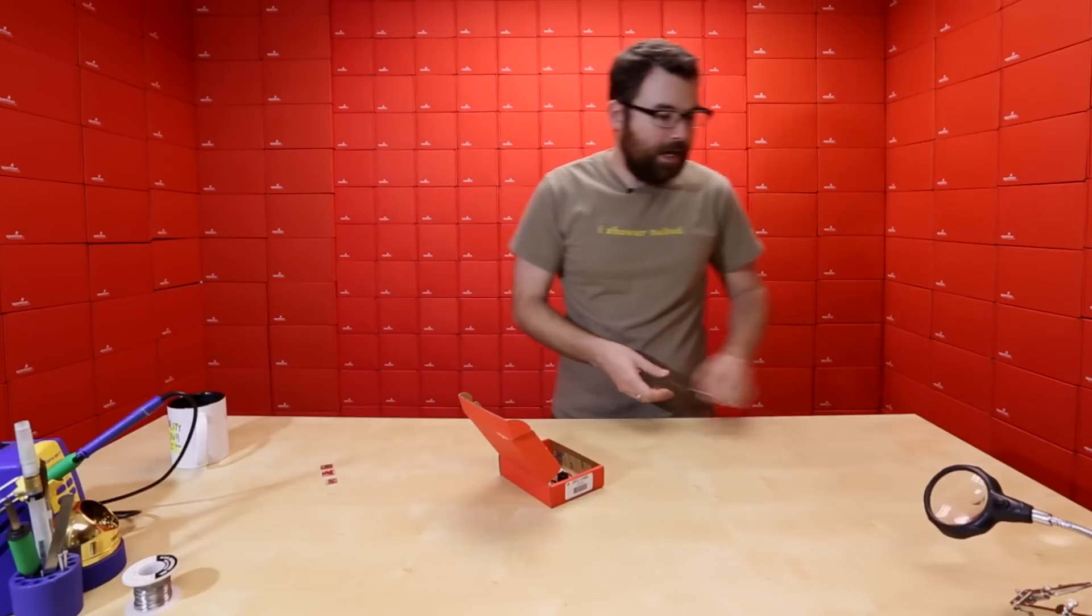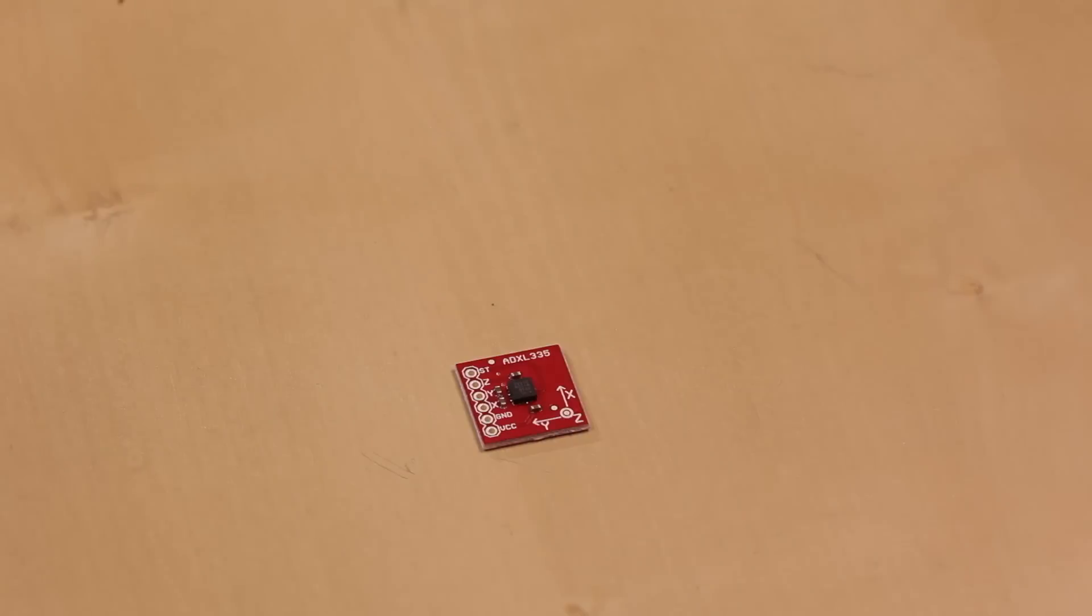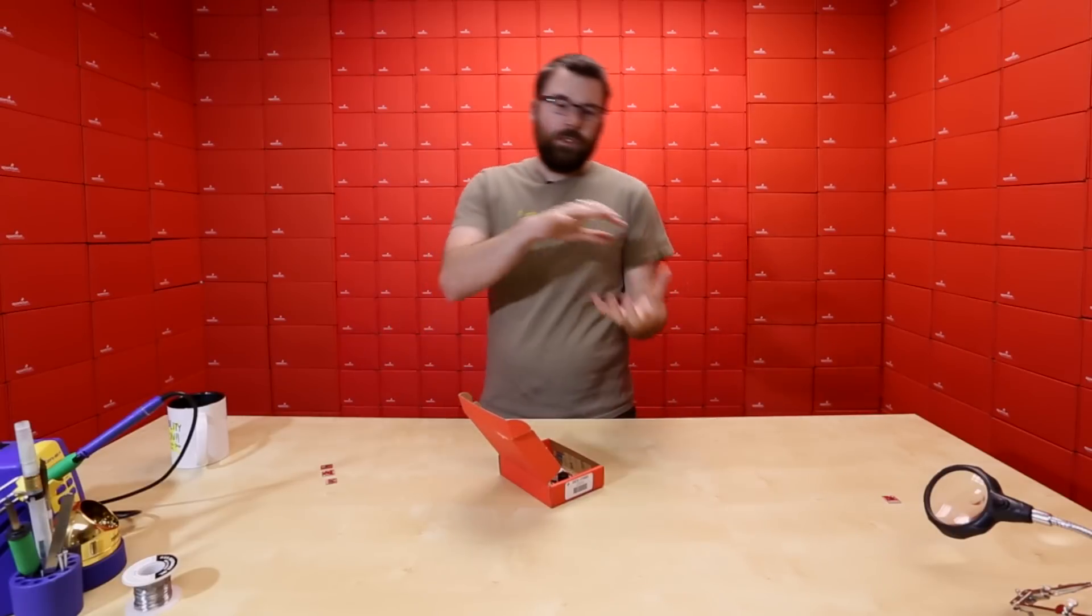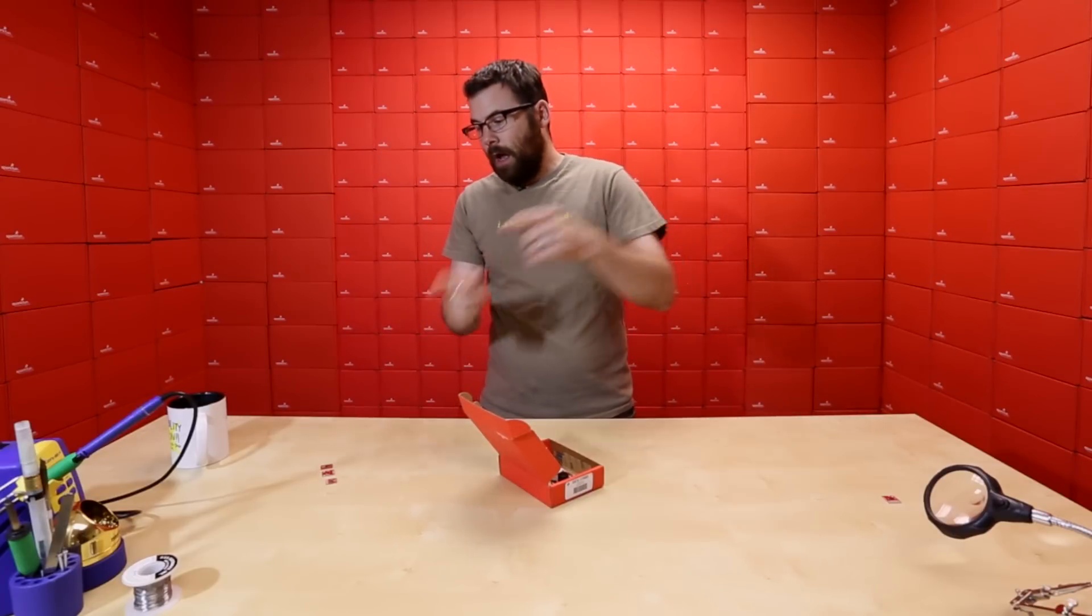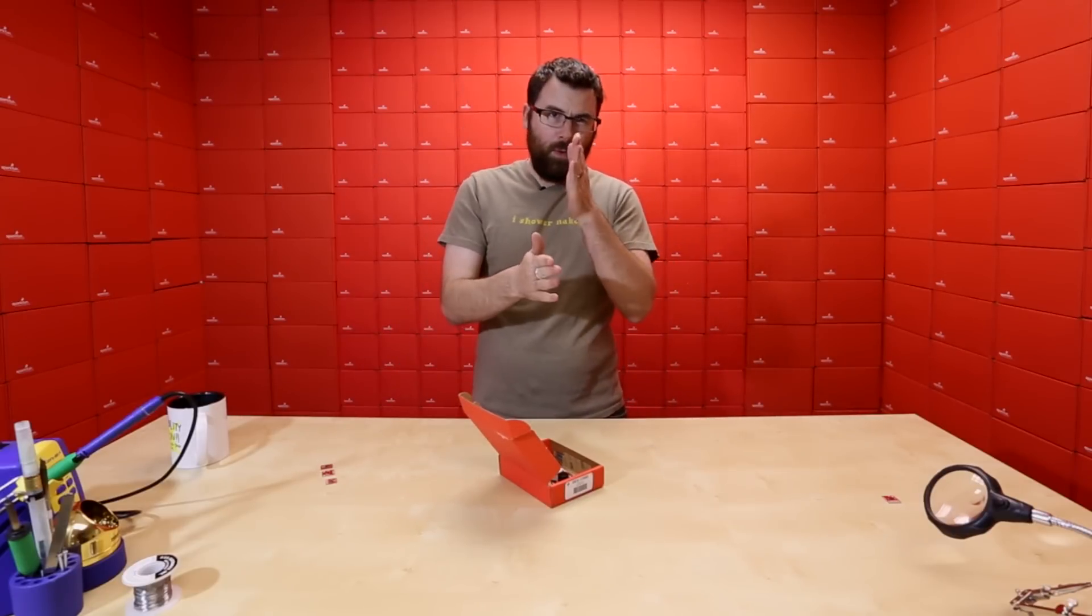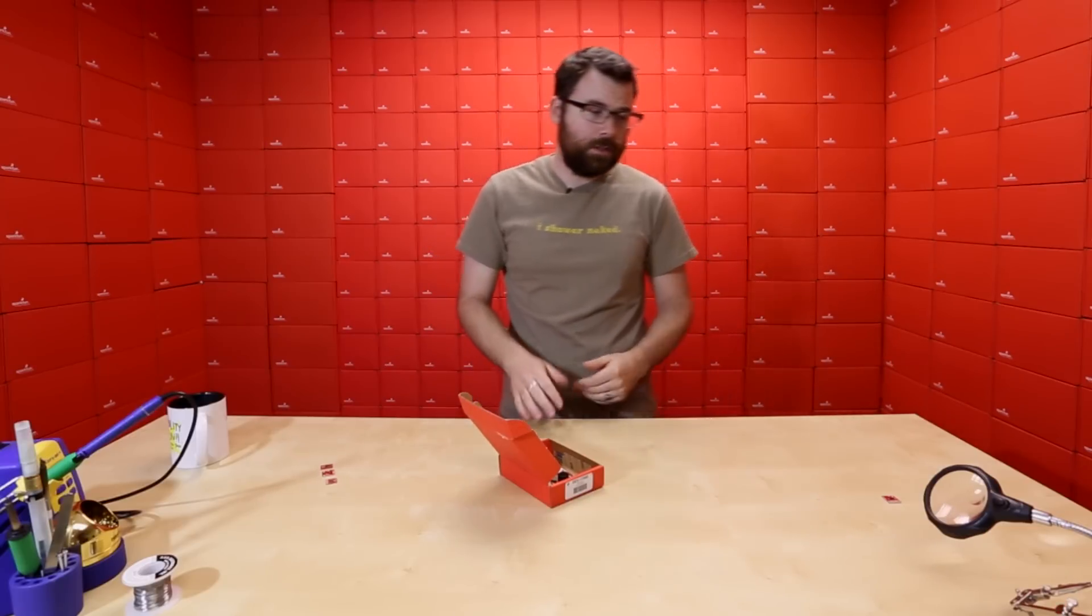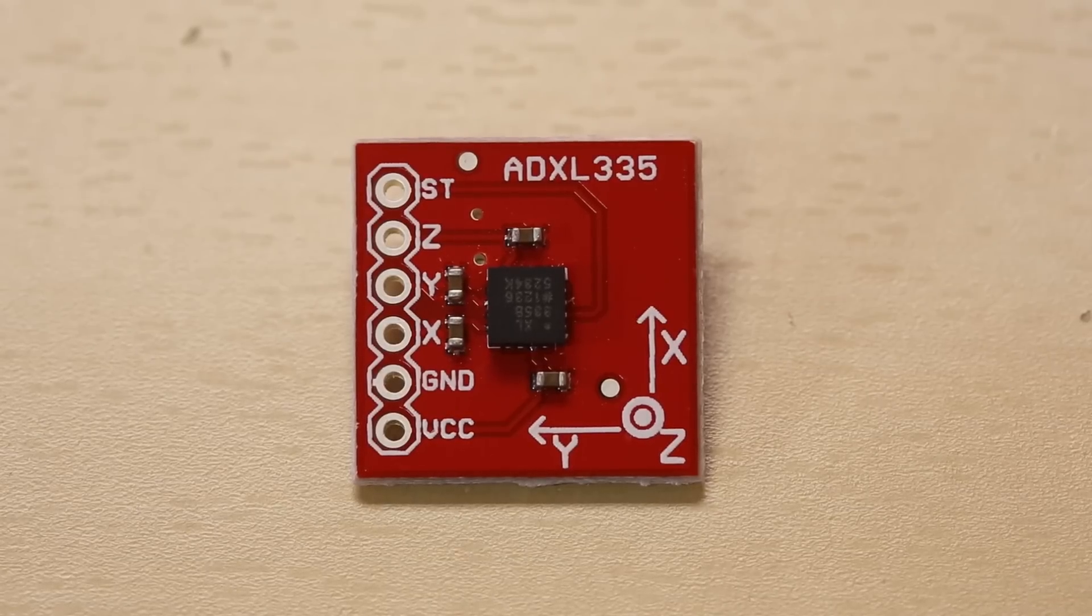Next up, we've got the ADXL335. The ADXL335 is a triple axis accelerometer. So whereas a gyroscope would say how fast you're turning, a magnetometer would be where you're pointing, the accelerometer would be how fast you're traveling in any of the three directions. And this has a simple analog interface, as opposed to the digital interface of some of these others.